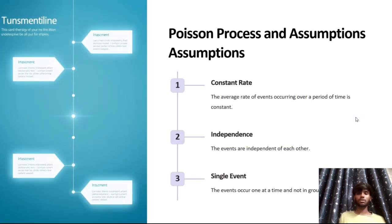Next, we discuss the Poisson process and its assumptions. Constant rate: the average rate of events occurring over a period of time is constant. Independence: events are independent of each other. Single event: only a single event occurs at a time.